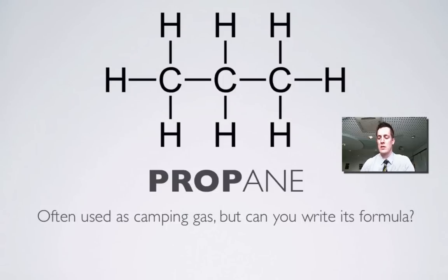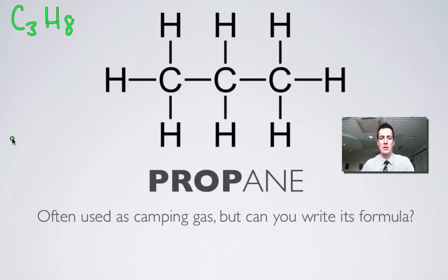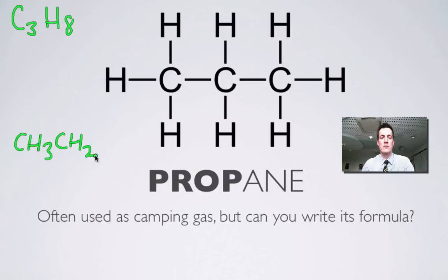Moving on to three carbons — a molecule with three carbons. 2×3+2 = 8, so C₃H₈, drawn here with all the bonds shown — single bonds only, because alkanes are saturated. We could also write its formula by describing each carbon in turn: CH₃ for the first carbon with three hydrogens, then CH₂ for the middle carbon, and then CH₃ at the end. So there are three ways of drawing the structure of propane.